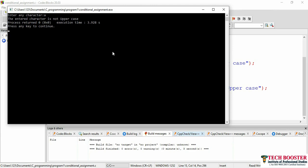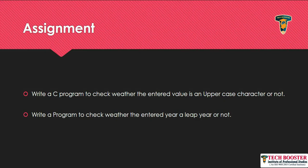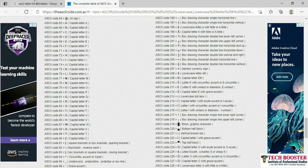Now let's move to our next assignment: finding whether an entered year is a leap year or not. The program will allow users to enter any year and then decide whether it's a leap year. To build the correct logic, we need to know the conditions for a leap year, so I'll open the browser and search for how to calculate a leap year.